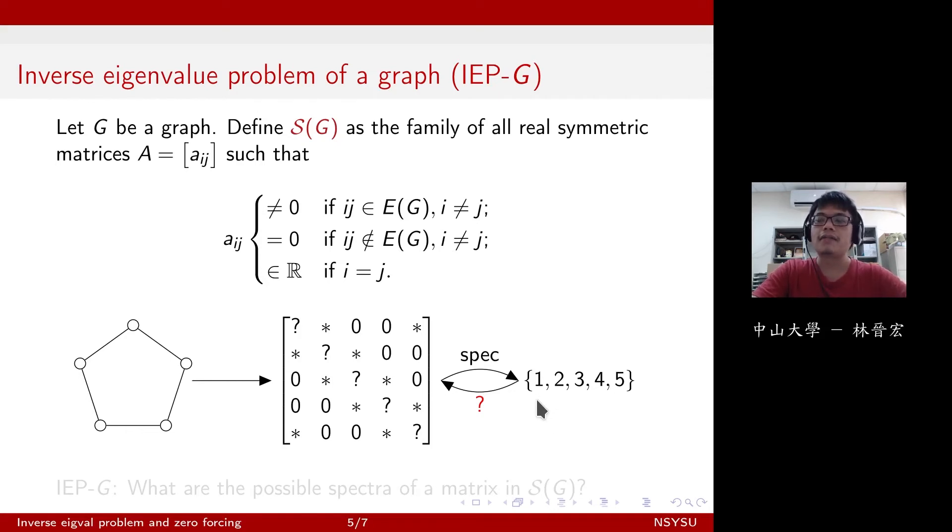But if I give you a set of real numbers, can you go back to S of G and find out whether there is a matrix whose spectrum is as desired, or there is just no such matrix? So the inverse eigenvalue problem is trying to find out all the possible spectra of the matrices in S of G.